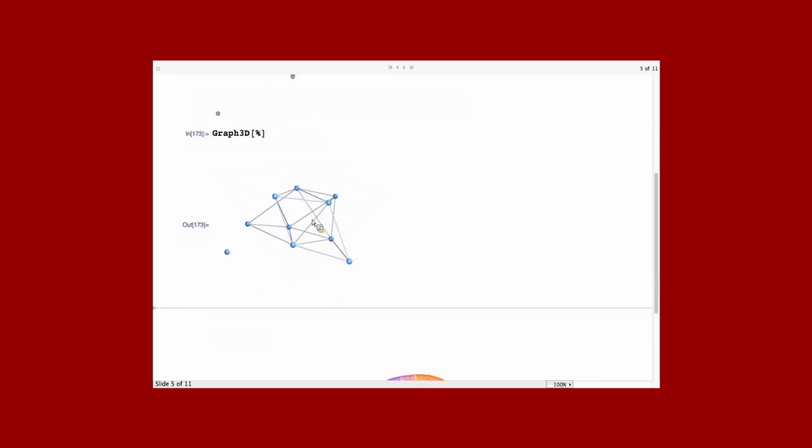You can rotate it, manipulate it as any object in the system, and you can even evaluate it. It's a first-class citizen object as Graph 2D, or the graph which visualizes as 2D in previous releases. That's a pretty nice feature.